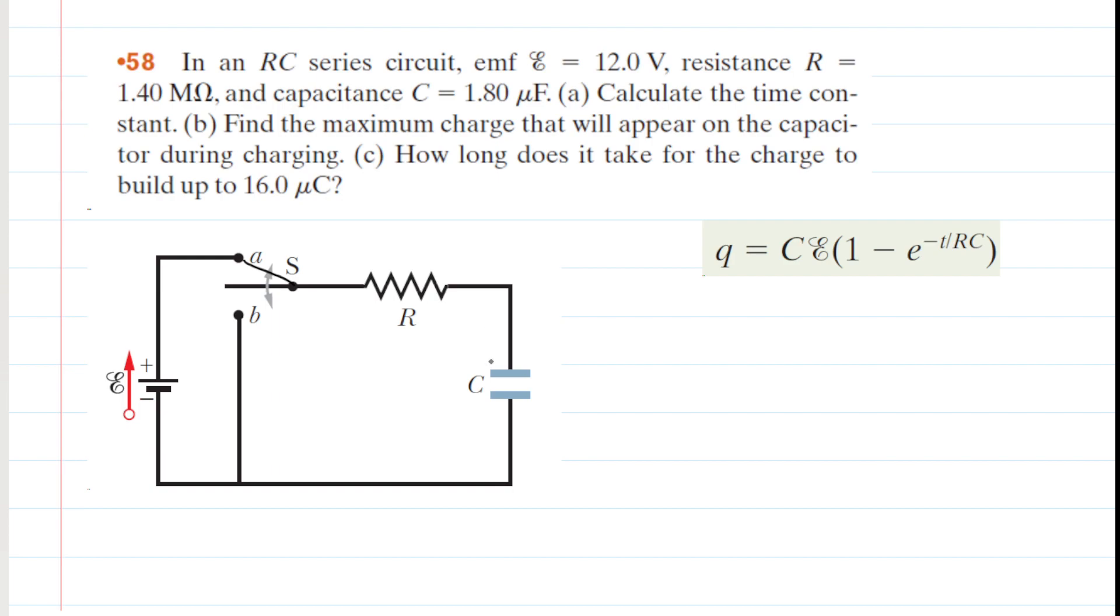One thing we're going to be doing in the question is solving for the maximum amount of charge that will appear on that capacitor. But first we need to calculate the so-called time constant, and the time constant appears in this equation right here. This equation gives us the amount of charge on the capacitor as a function of time, and the time constant within this equation appears right there. It is the resistance times the capacitance.